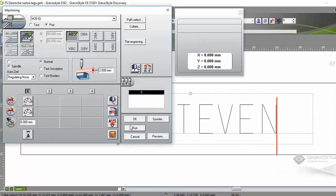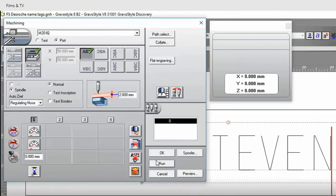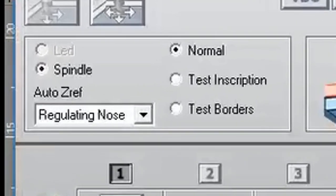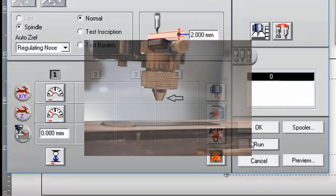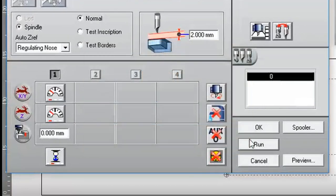I will run through the main items on this screen so you can check your settings. We are going to engrave using the regulating nose method. The nose is the cone shaped piece at the bottom of the engraving head where the cutting tool is located. In a minute we will see how we set the auto Z ref point and cutting height.